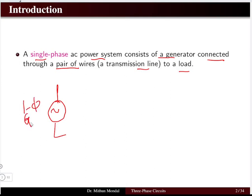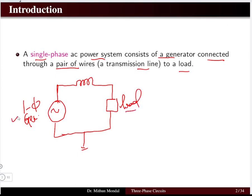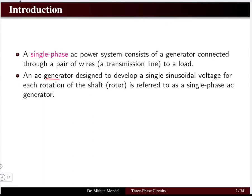In a single-phase system, we have a generator as the source, and then we have the transmission line through which the power is transmitted to the load. The load will always be single-phase because the system is single-phase. The transmission lines are usually represented with the help of an inductor. The AC generator designed to develop a single sinusoidal voltage per rotation of the shaft or rotor is referred to as a single-phase AC generator.